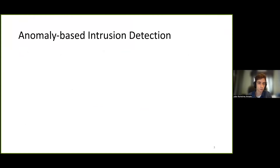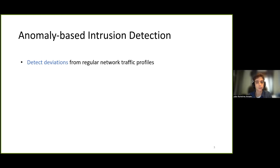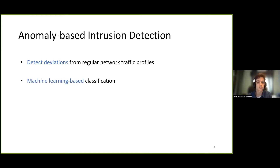One class of intrusion detection that has been widely explored in recent literature are anomaly-based systems. This class of intrusion detection is focused on detecting deviations from regular traffic profiles and has the ability to detect previously unknown attacks. Their detection process relies on classification methods, with machine learning techniques being a common approach in recent implementations.